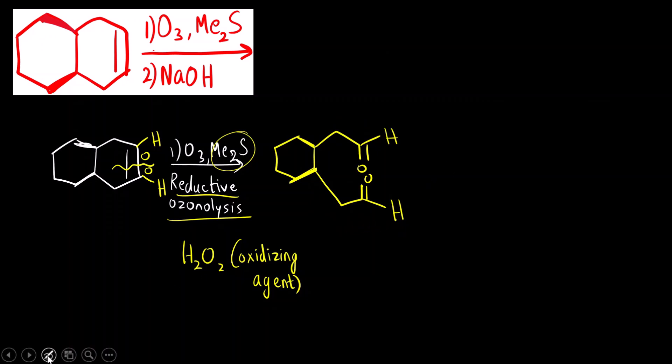What will happen? Base is present. At the alpha position, this alpha hydrogen is acidic in nature. That will be abstracted by the base to form the enolate first.